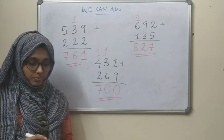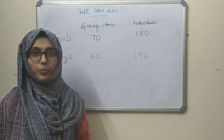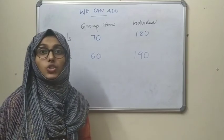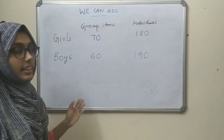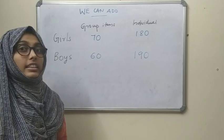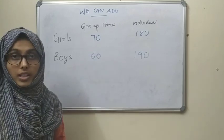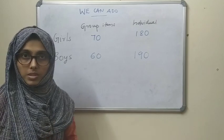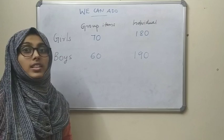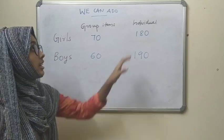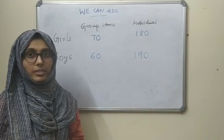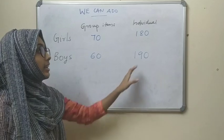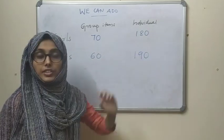Now we will move to the next section. My dear students, the sports day is over and they are going to calculate their scores. In the textbook, the girls say they got 70 points in group items. In sports there are group items and individual items. Girls scored 70 in group items and 180 in individual items.